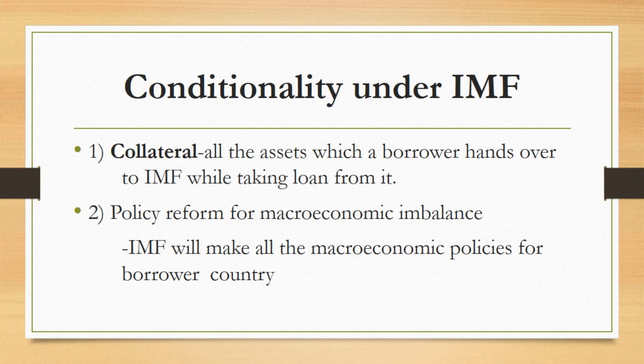Now we will see what conditions IMF imposes upon the country taking a loan from it. These are basically policies which a borrower must follow. The most important ones are collateral and policy reform for macroeconomic imbalance. Collateral basically includes all the assets which a borrower state hands over to IMF while taking a loan, to ensure that its loan will be returned. IMF is authorized to keep that collateral if the state fails to return the loan.